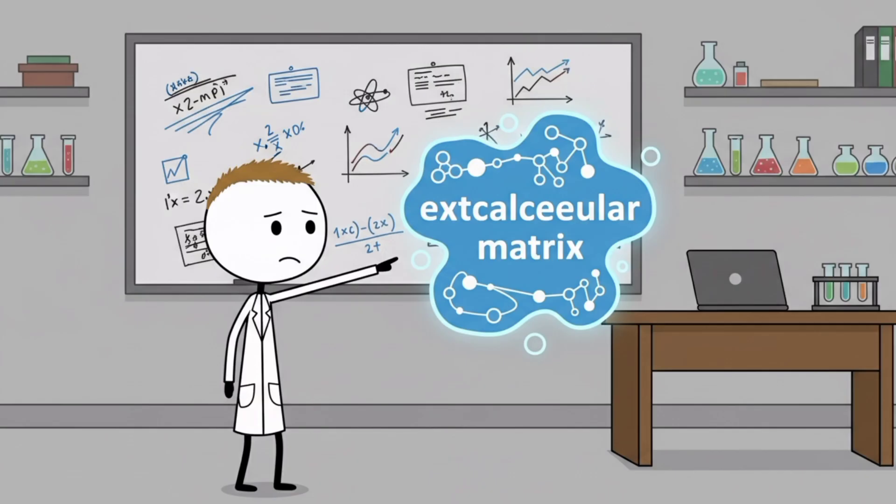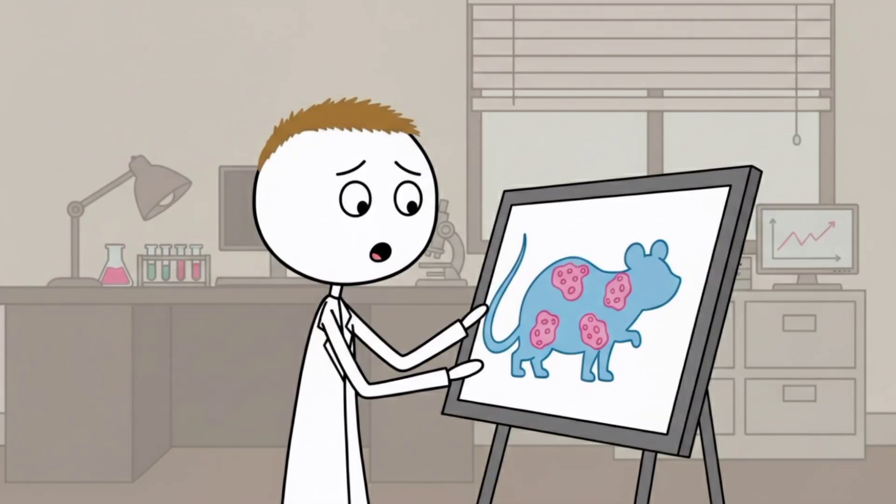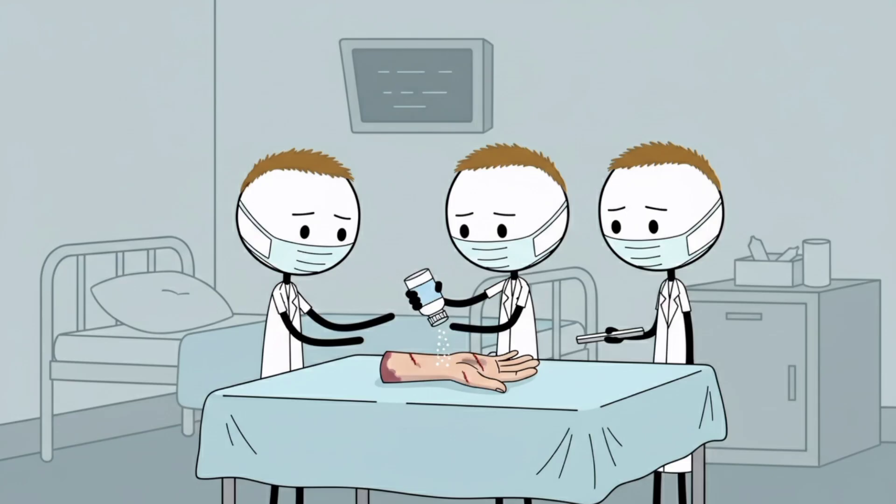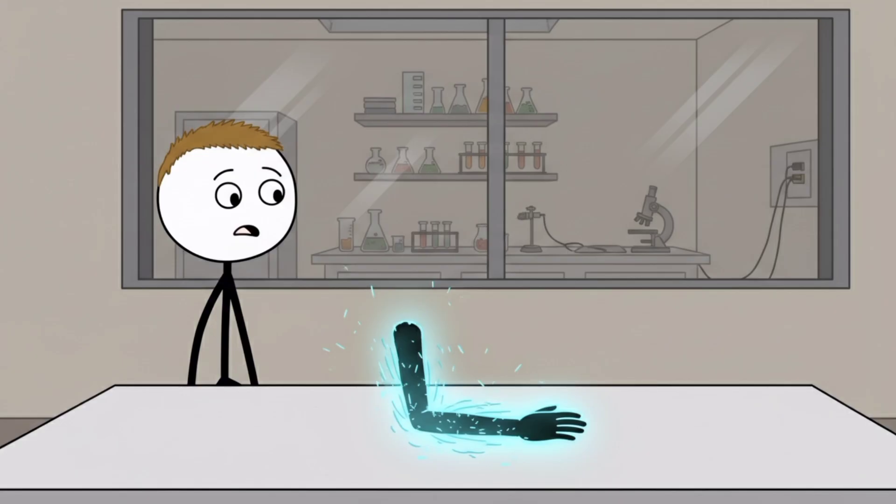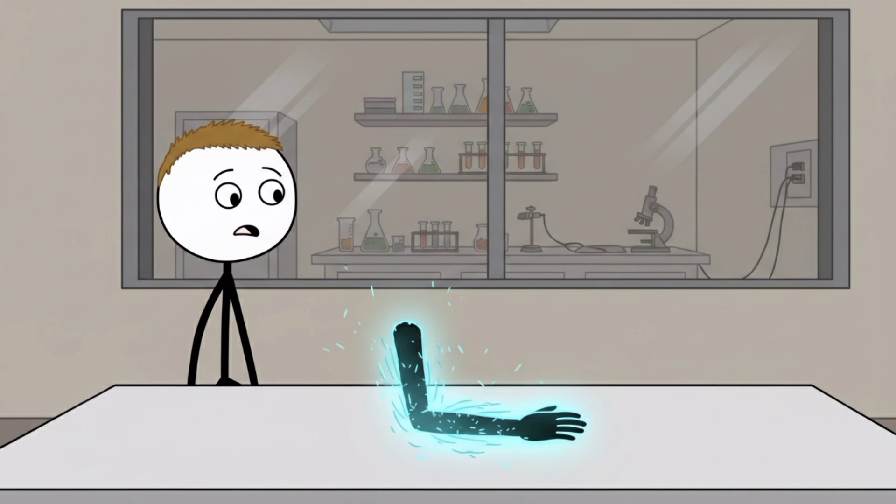Researchers discovered that extracellular matrix, the scaffolding that holds our cells together, can trigger regeneration in mammals. They applied this powder to severe injuries and watched human tissue regrow like we're suddenly Wolverine. A man who lost half his finger grew it back completely.